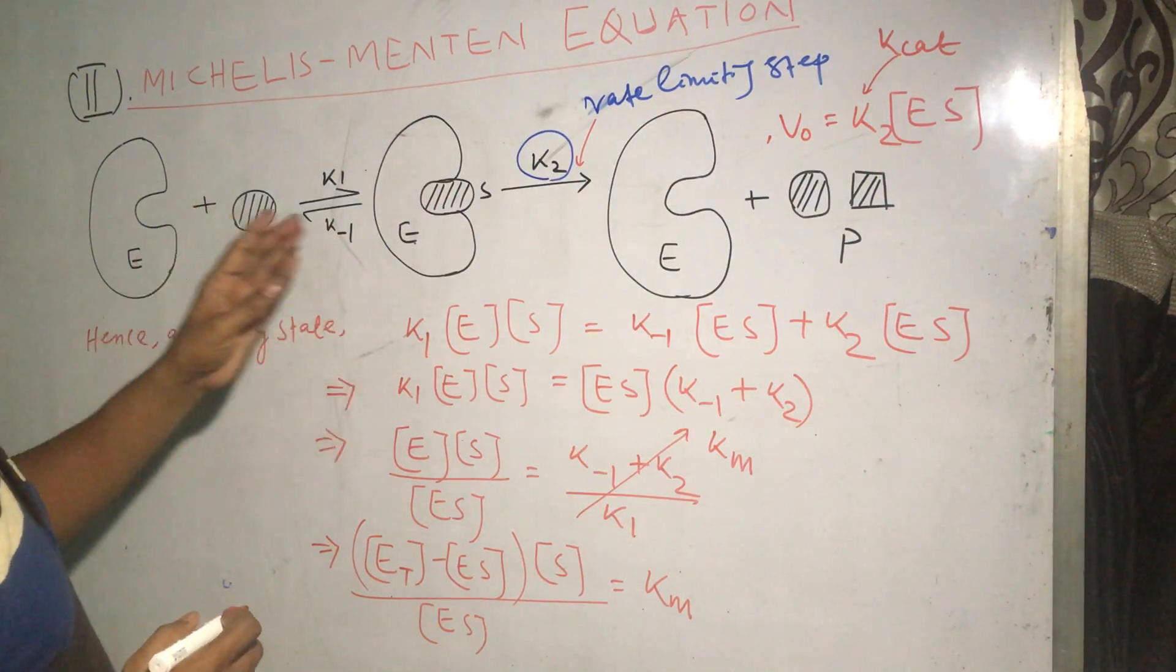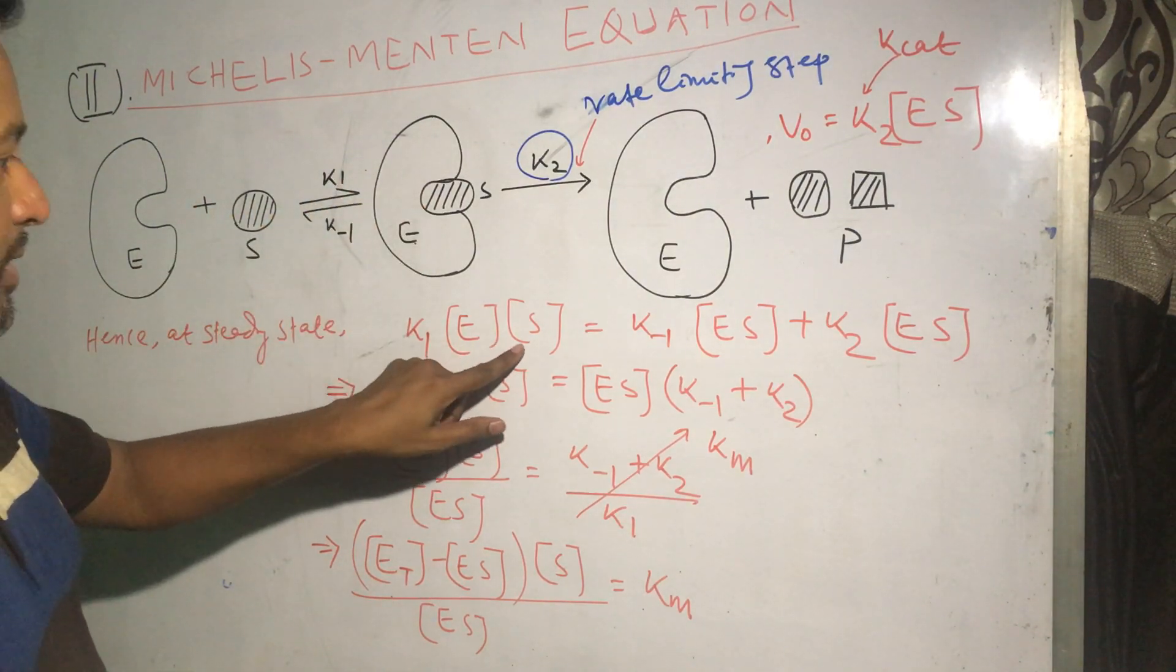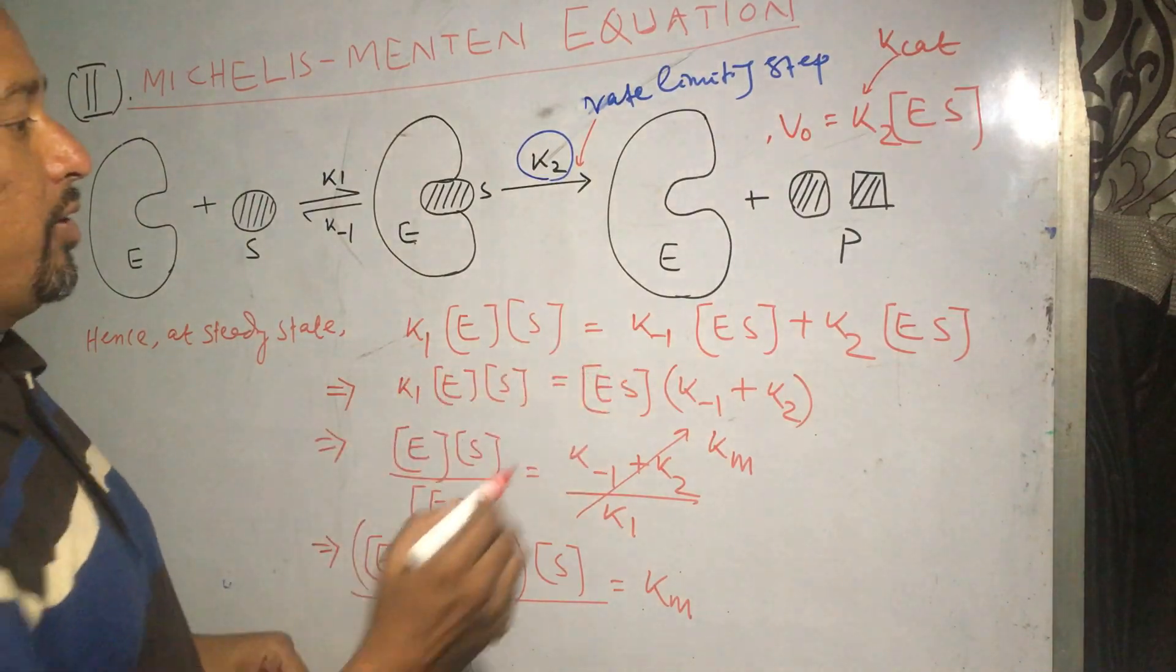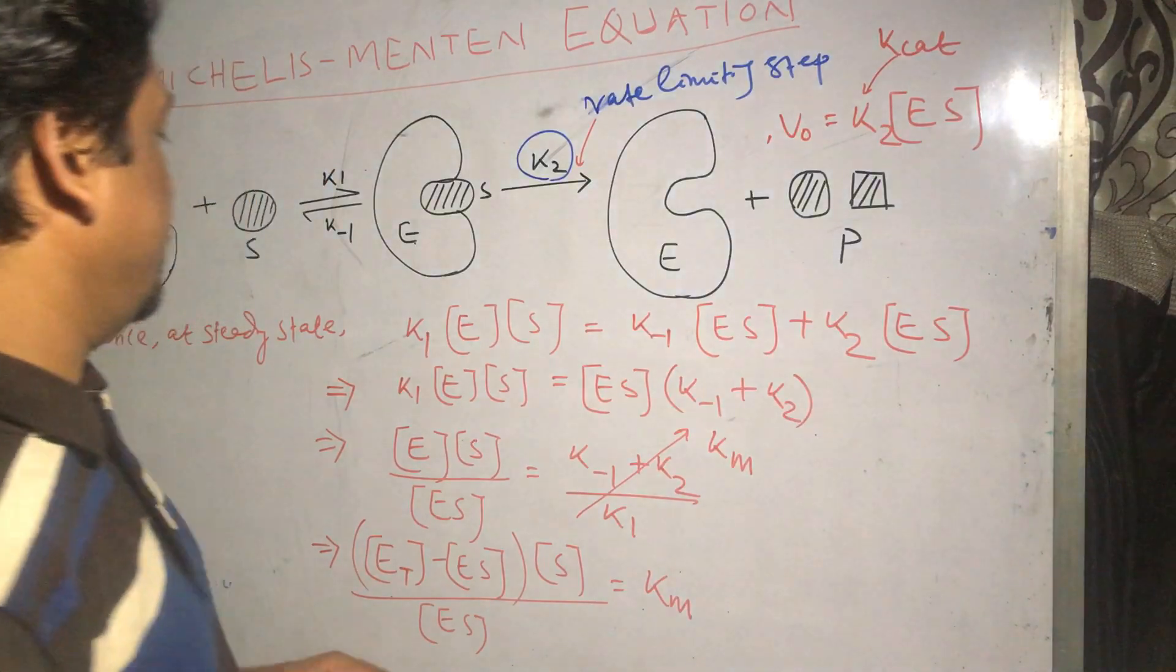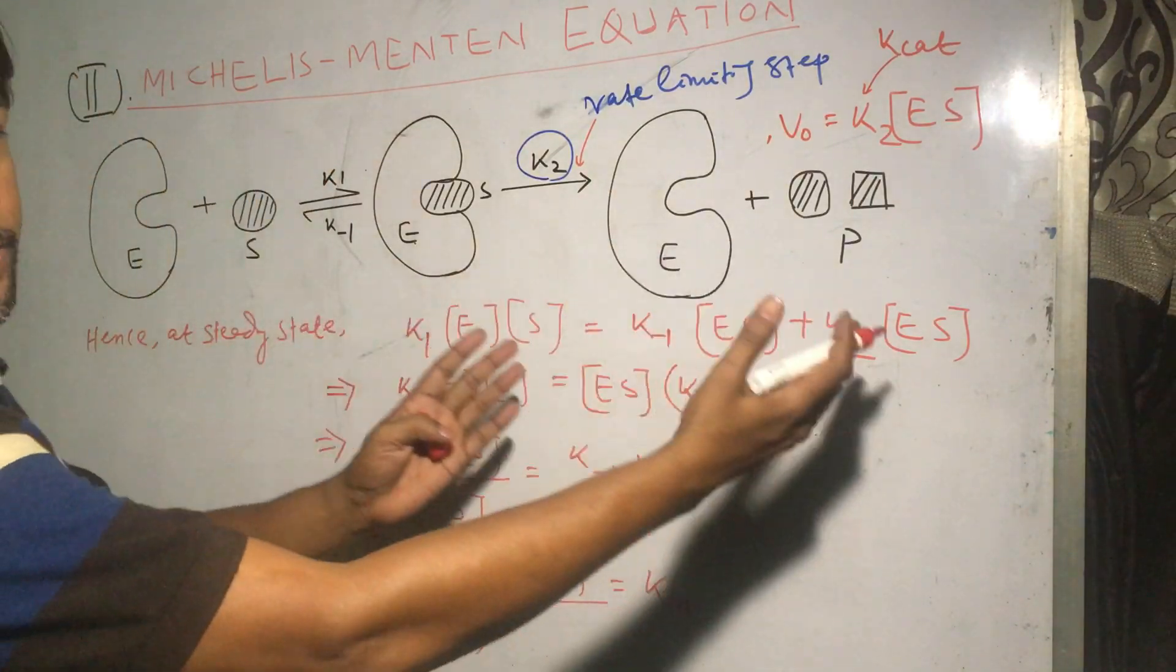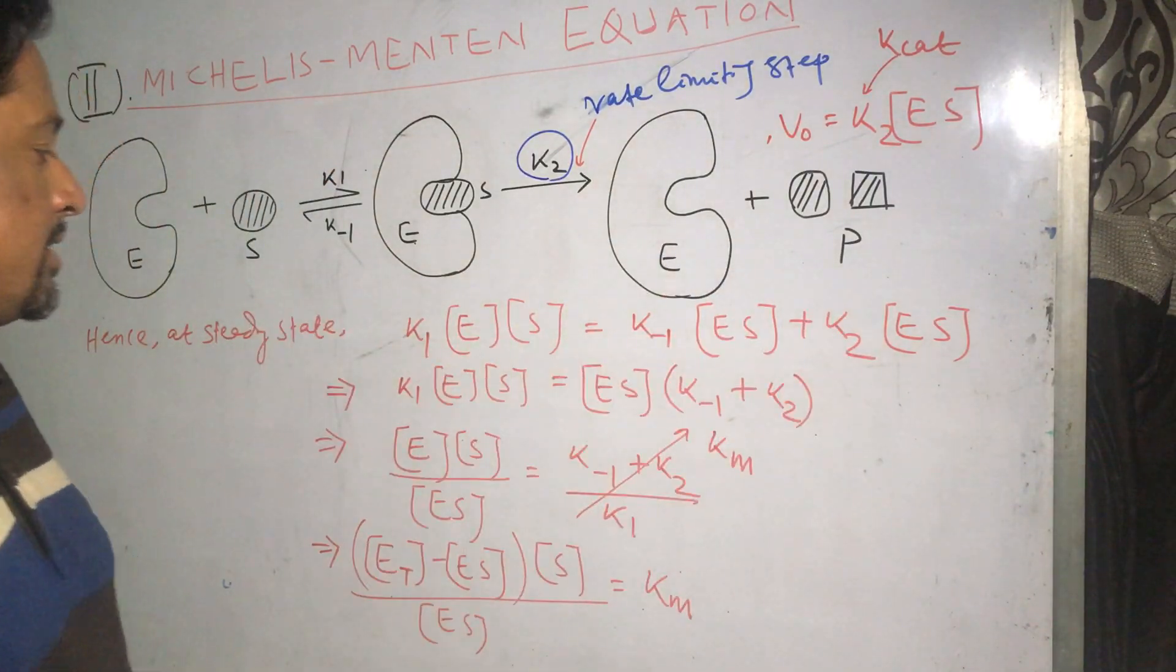The rate of formation of ES complex is given by this equation, and the rate of dissociation of ES complex is given by this equation. At steady state, both are equal, hence we can write this.